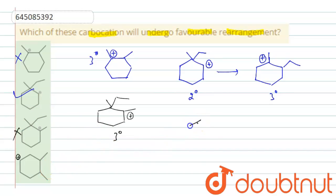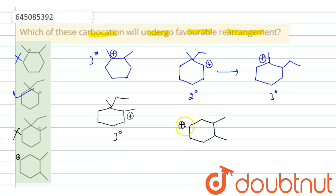The last carbocation has the positive charge here — it is a secondary carbocation. If it rearranges, meaning if the hydrogen shifts to this place or that place, it again becomes a secondary carbocation only. Therefore, it will not undergo rearrangement. So, which carbocation will undergo favorable rearrangement? The second carbocation will undergo favorable rearrangement. Thank you.